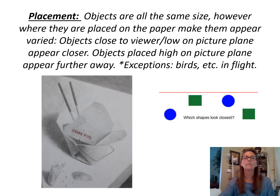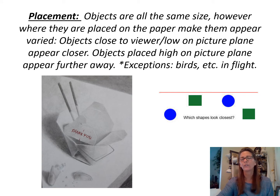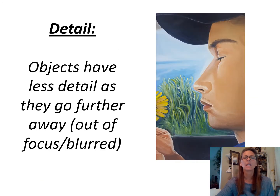Then you have placement. Placement is where you position objects of the same size to give the illusion of whether something is closer to you or further away. In the drawing over here you can see the fortune cookies are low on the picture plane, representing the foreground, and then your takeout box is in the middle, and the table edge and floor would be your background.